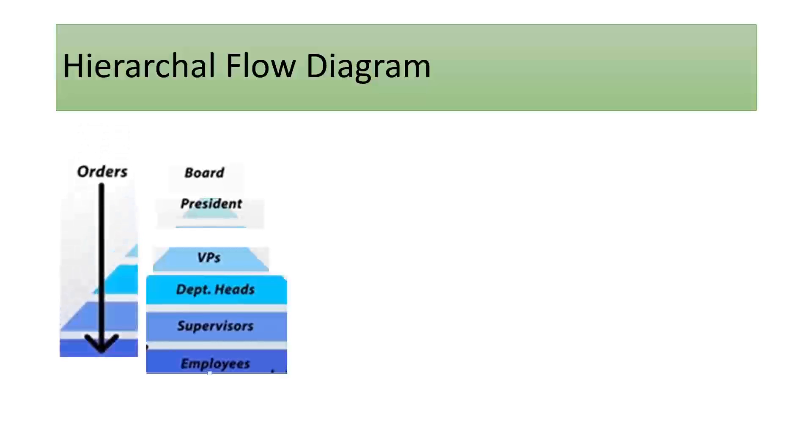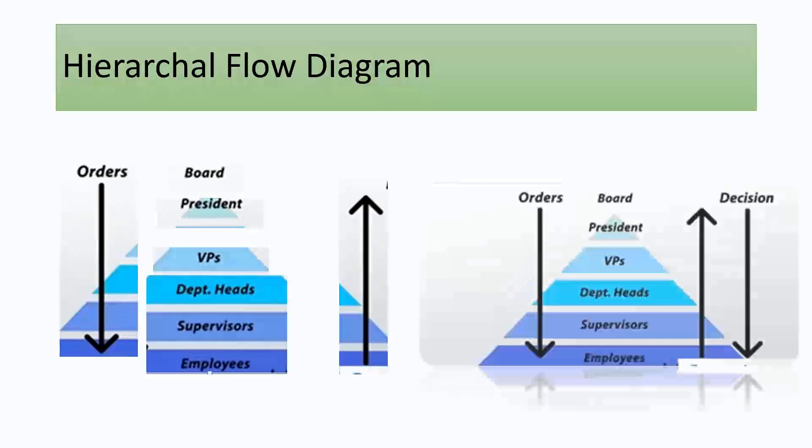The orders and the decision flow from top of the hierarchy to the lower level, and thus the output flows from the lowest level to the highest level. Hierarchical level maintains a decorum and the overall organizational flow. This was all about today's topic. Have a nice time ahead. See you in the next video.